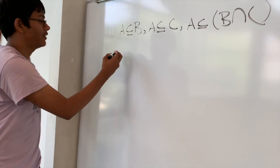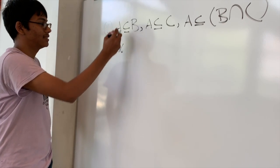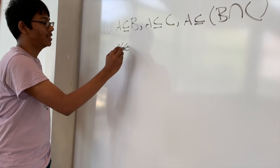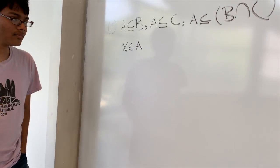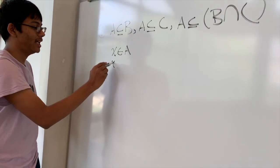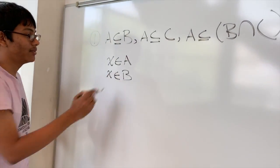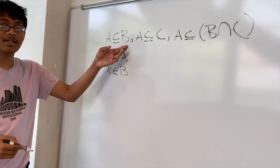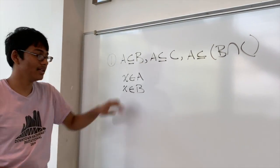Well, let's say you have an element X that is an element in set A. We know that this element X must also be an element of set B, because A is a subset of B.